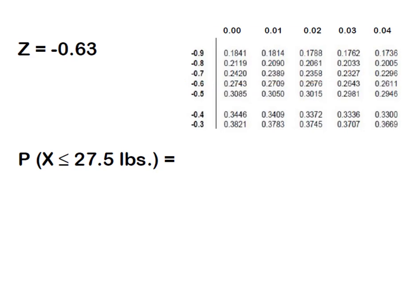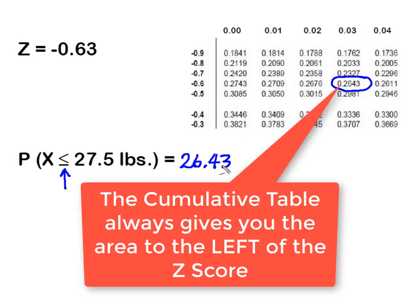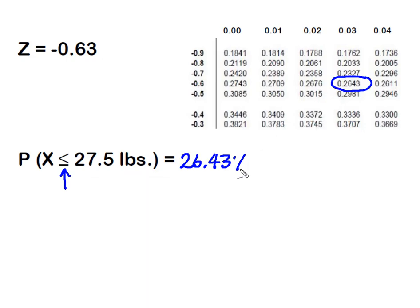Because we were solving for the probability of this puppy weighing less than or less than or equal to 27 and a half pounds, we're moving in the same direction as this cumulative normal distribution table. So we don't have to add or subtract anything. We're going to be able to use that 26.43 is going to give us the answer of 26.43 percent, which is the probability that a randomly selected puppy would weigh less than or equal to 27 and a half pounds.